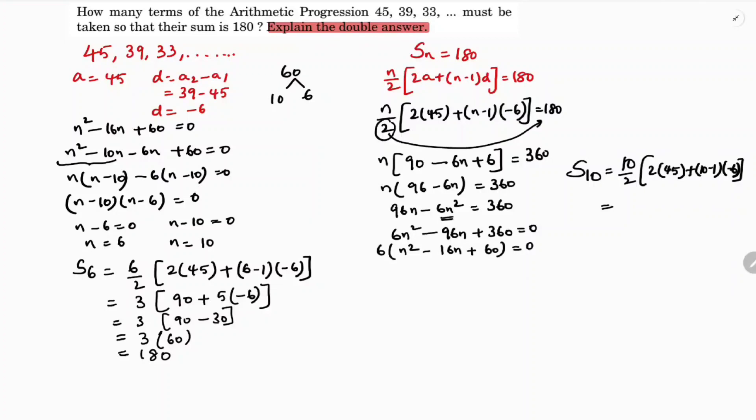5 times 90 minus 9 times 6. Minus 6 is 54, minus into plus is minus. So here 90 minus 54 is 36. So 5 times 36 is again 180. So sum of 6 terms is 180 and sum of 10 terms is also 180.